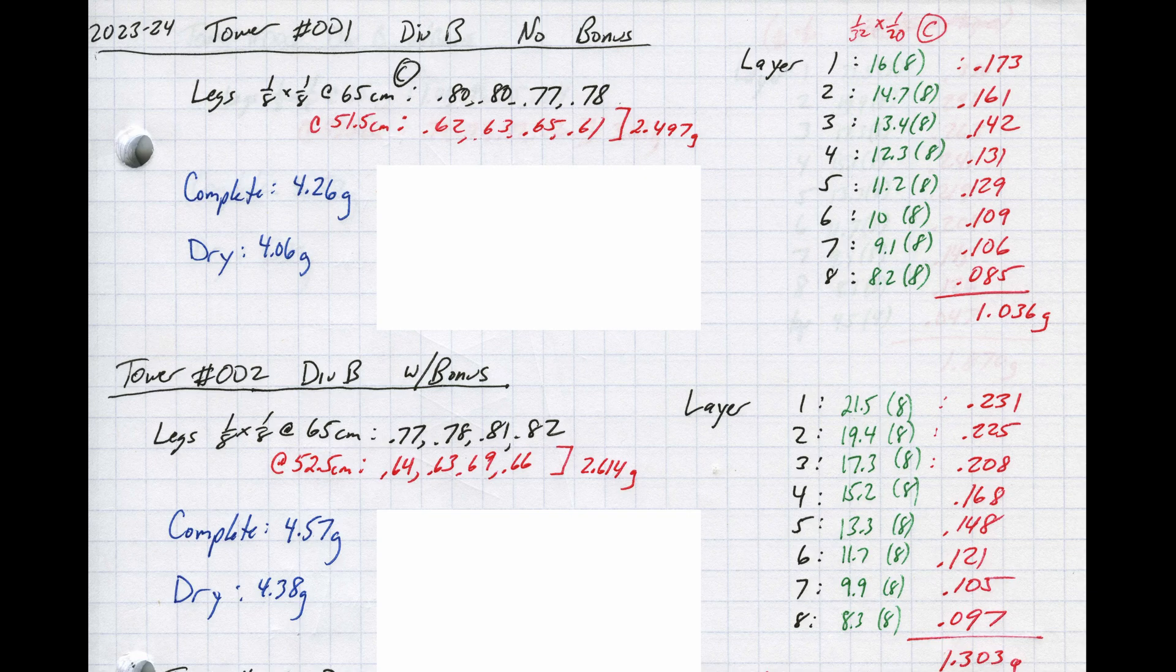Before I show the actual testing for these towers, let's take a look at my notebook log for each one. I'll block out the results as to not spoil them. You can see that at a normalized length of 65 centimeters, I used almost identical 1/8 by 1/8 legs and both builds used the same 1/32 by 1/20 cross member pieces.